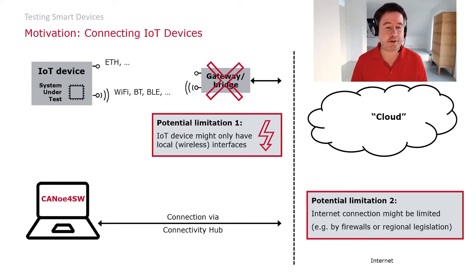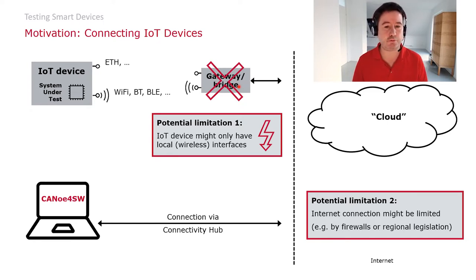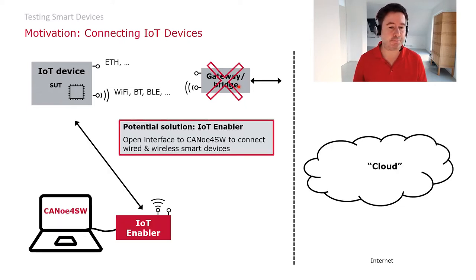This might be one limitation. Another limitation might be that the actual gateway or bridge is not available. In these situations, you have no chance to do a test of your IoT device. For these cases, the IoT Enabler comes into play.